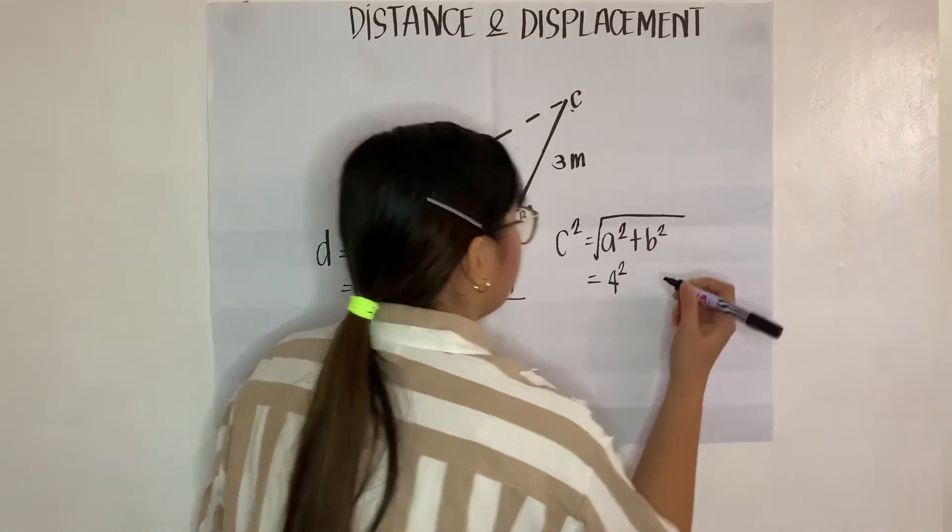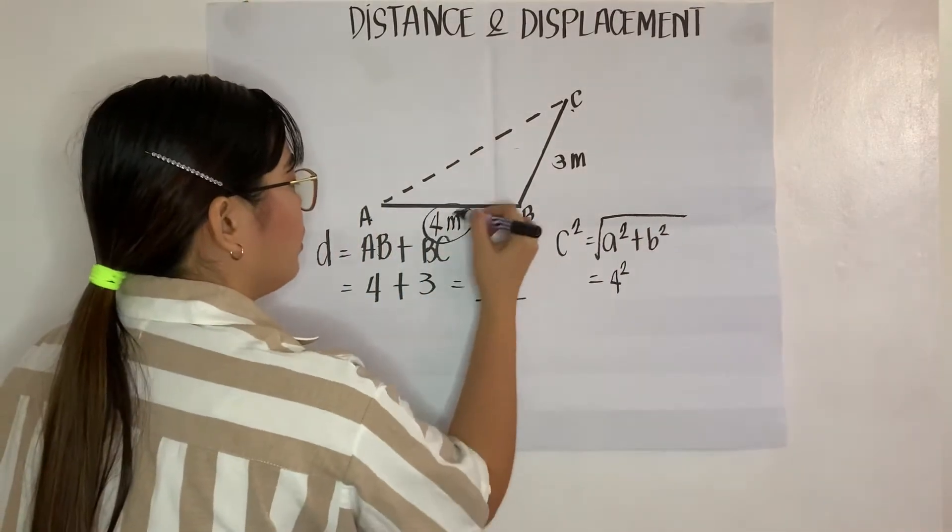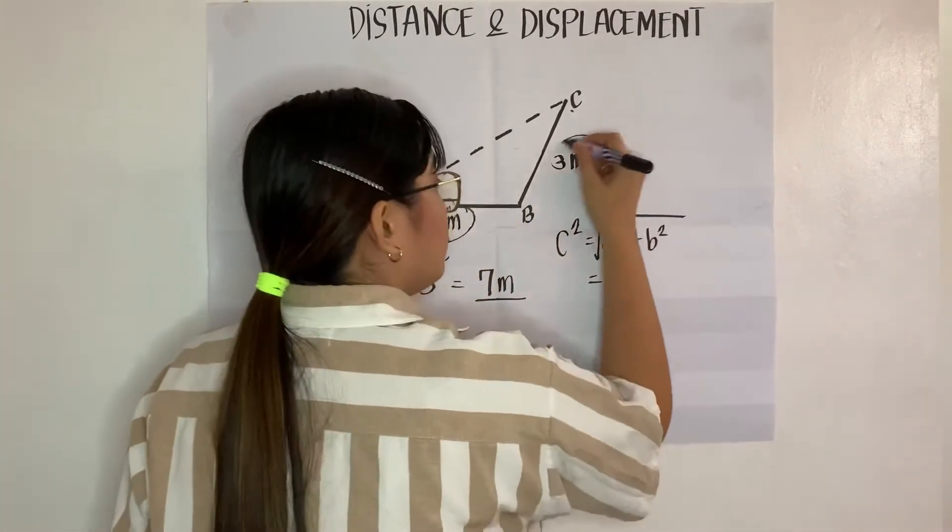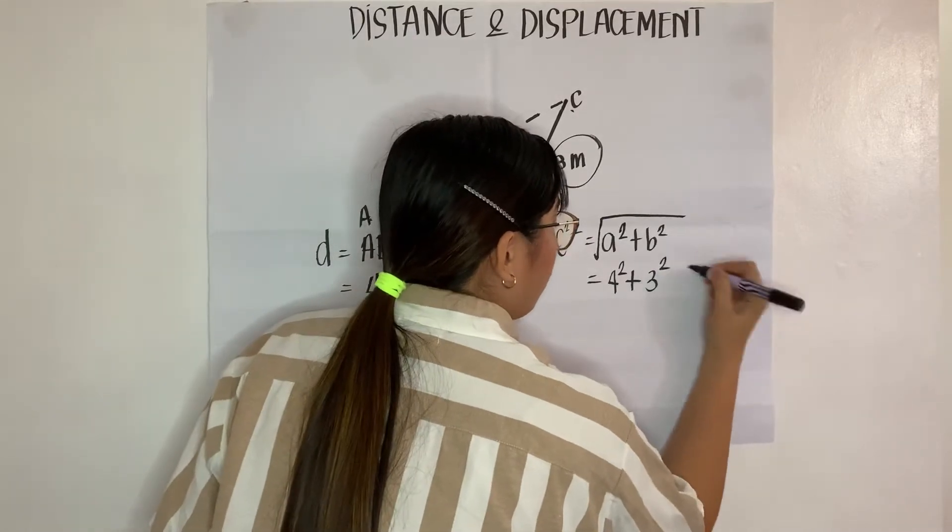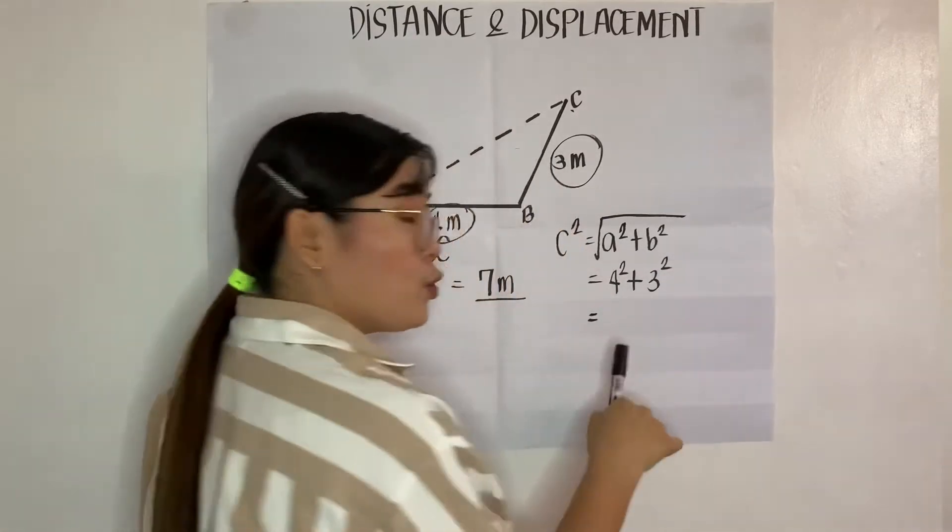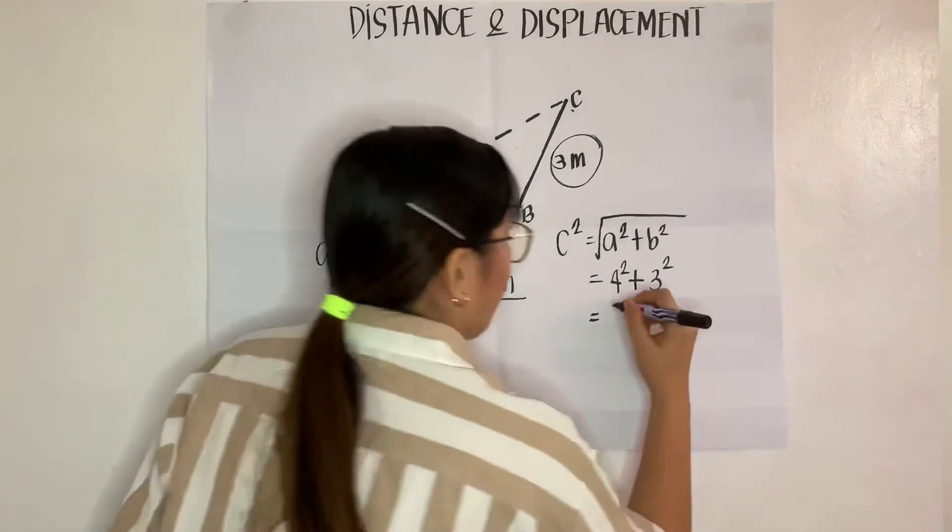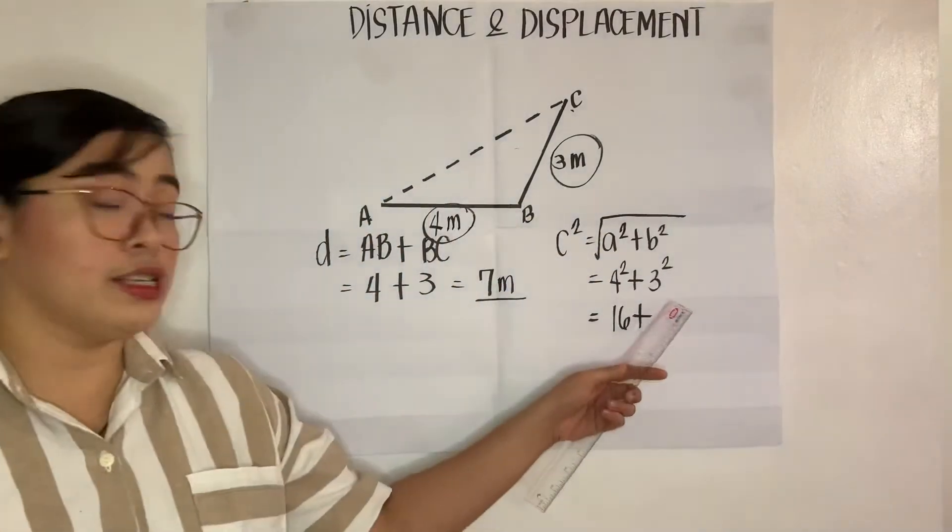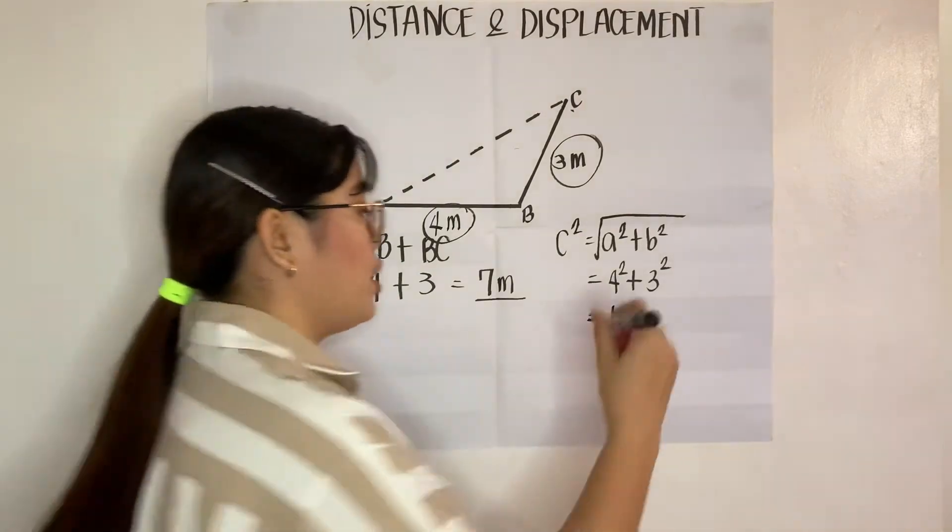squared. This will be your A squared. And your B will be 3 meters. 3 squared. So, 4 squared is equal to? Right. 16. Plus, 3 squared is equal to?